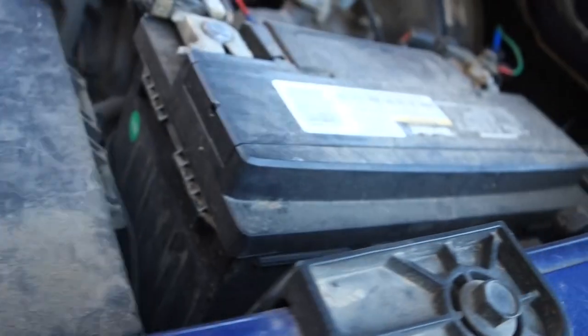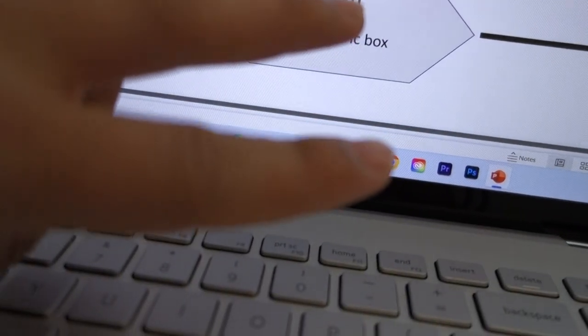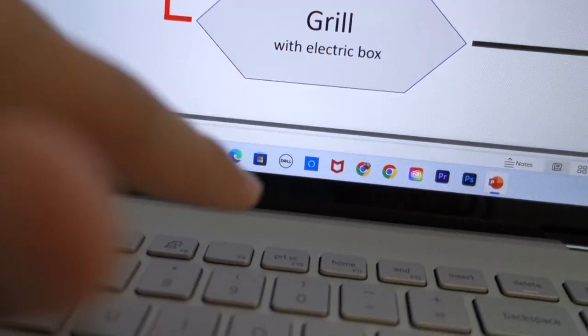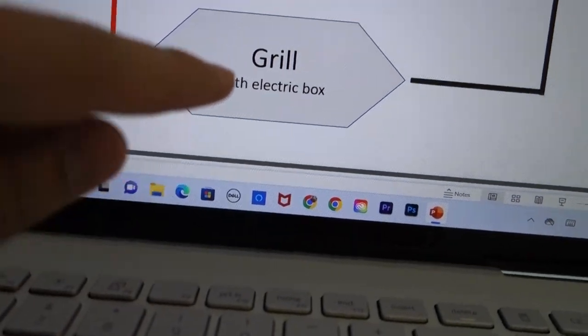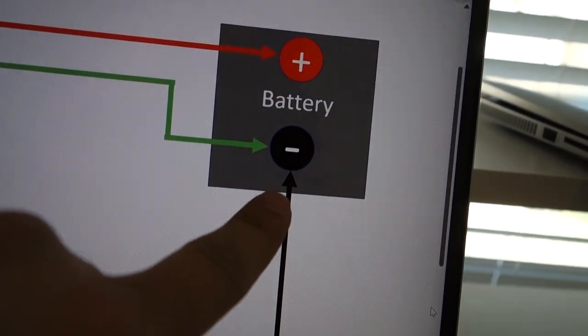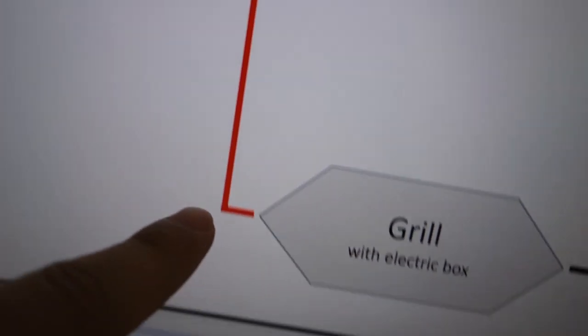That goes to the gearbox that we cut and the battery. Keep that in mind. The gearbox has two wires that we had to cut and splice up. From the electrical box, there is a negative that goes to the battery and the other one is a positive that goes to the switch.